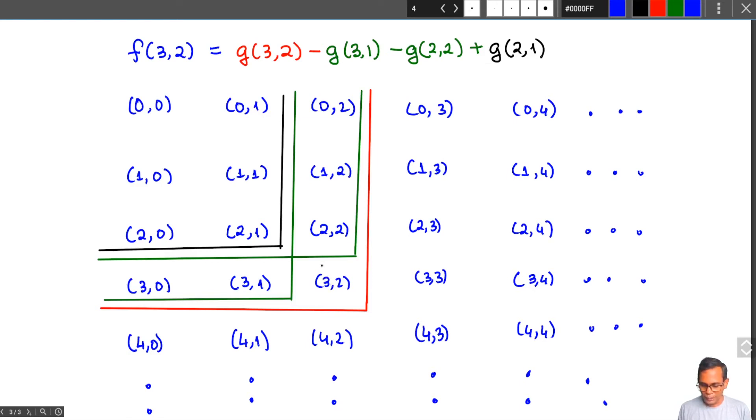So what have I removed? I've removed everything except in the last row, everything except in the last column. So all I'm left with is, well almost I'm left with f(3, 2), but there's stuff that I've removed two times and that's the stuff in the black quadrant. So I'll add it back again and so what I get is f(3, 2) = g(3, 2) - g(3, 1) - g(2, 2) + g(2, 1), and that is an example of this Möbius inversion in two variables.